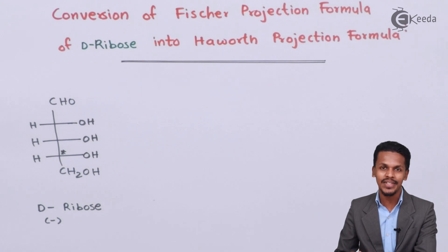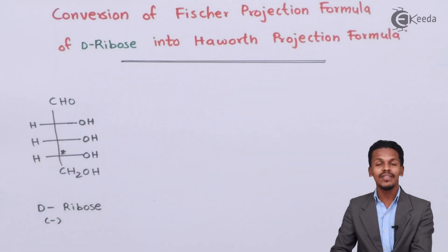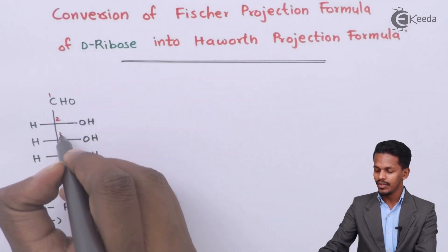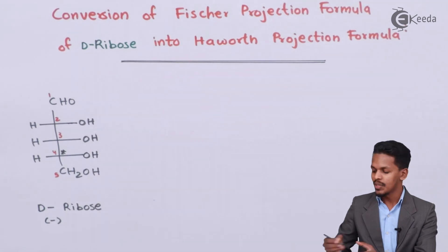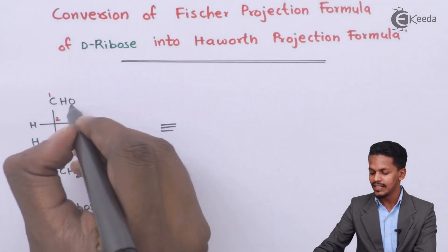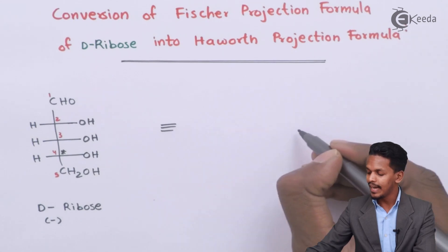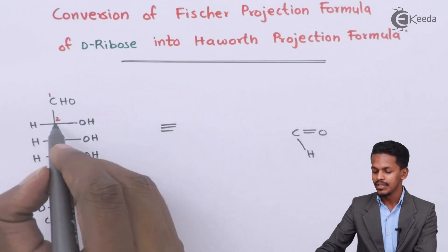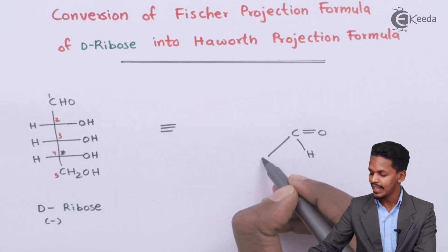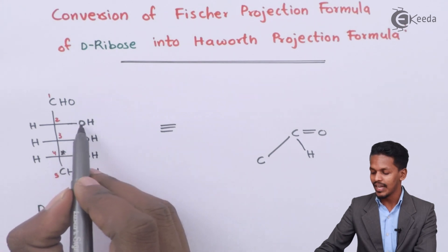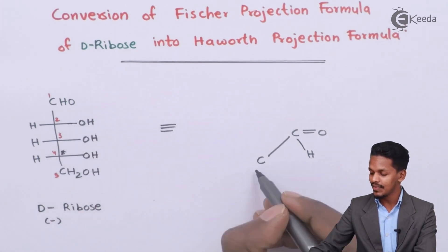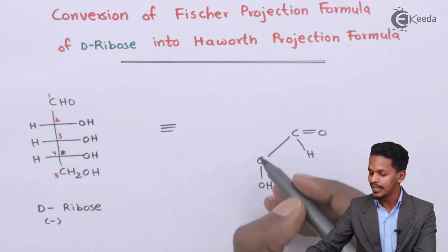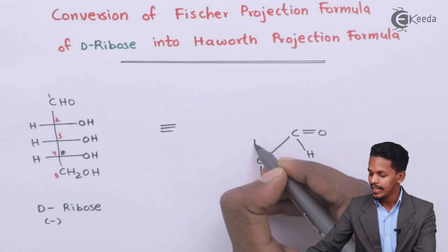To convert, we have to number the carbon atoms: carbon number 1, 2, 3, 4, and 5. The first carbon atom is the aldehyde group, written as C double bond O with H attached. Moving to the second carbon atom, we can find the OH on the right hand side, so in the Haworth projection formula we put OH pointing downward. This is the second carbon atom.